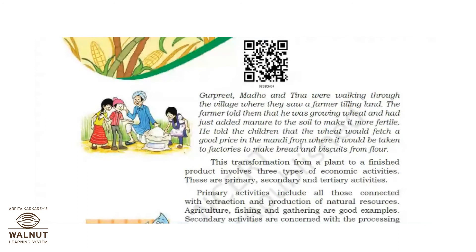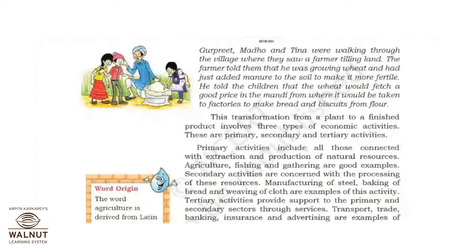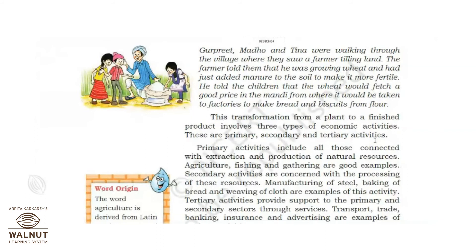The wheat would be taken to the market, and from there to factories to make bread and biscuits from flour. So we see the transformation from a plant to a finished product involves three types of economic activity — primary, secondary, and tertiary — which we have already seen. In that example, agriculture is the primary activity, the growing of wheat. The production of bread and biscuits from flour is the secondary activity.